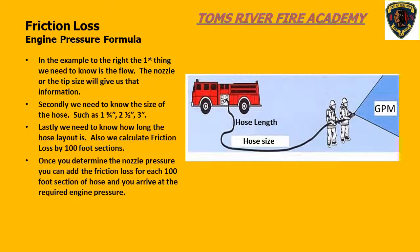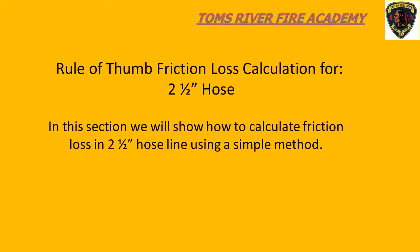One important point: friction loss is calculated on each 100-foot section of hose. Don't be confused by 50-foot hose lengths. We're going to use a rule of thumb formula to calculate friction loss in 2.5-inch hose, because it is a pretty easy example to start with. We use rule of thumb formulas for this class because they are easy to remember at 3 a.m. These formulas are not exact but are close enough for our purposes.